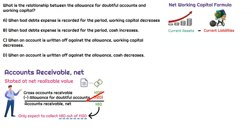We have our gross accounts receivable balance, but for most companies, there is going to be some level of receivables that they won't collect. They'll have to estimate that, but it's going to reduce their gross accounts receivable balance down to accounts receivable net. Since it's a contra asset, it's going to lower our accounts receivable balance, which lowers overall current assets when we record Allowance for Doubtful Accounts.